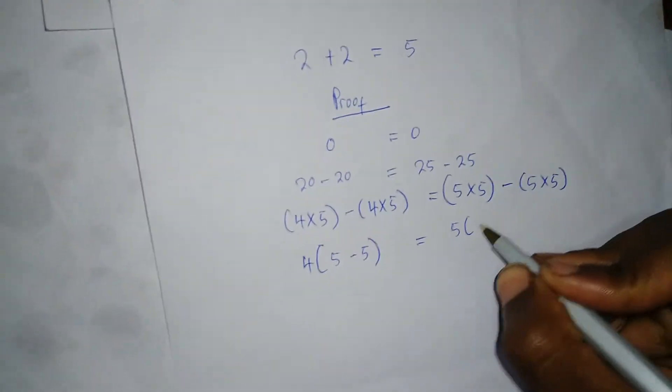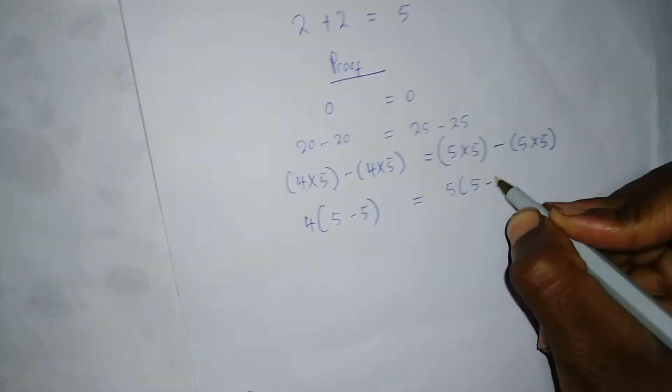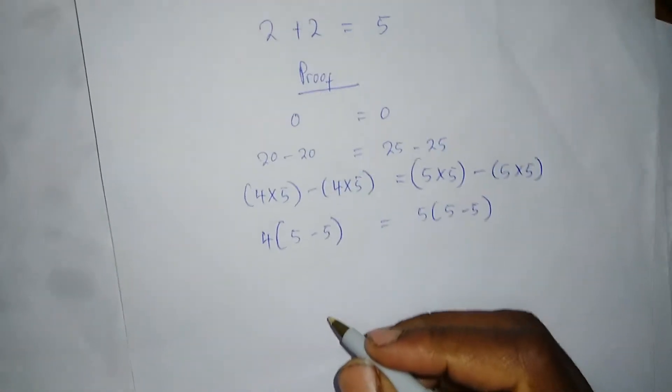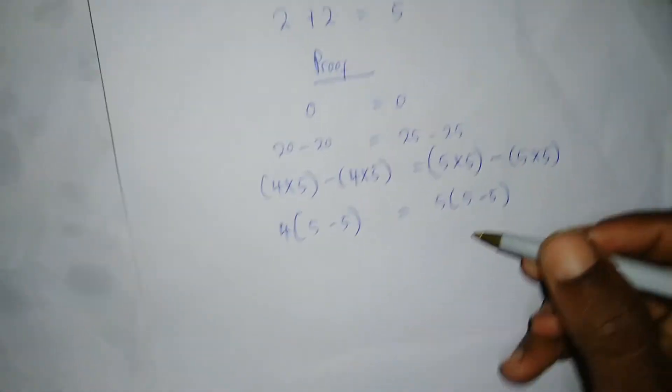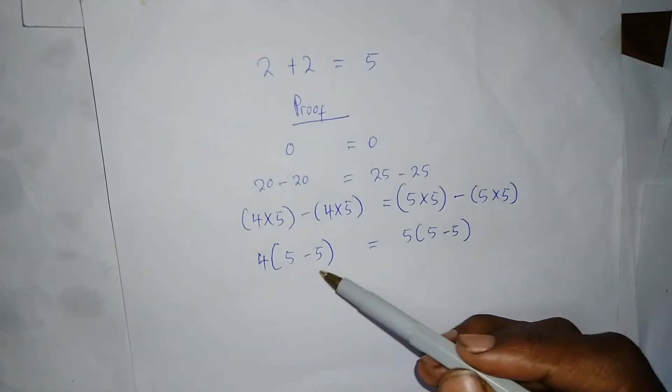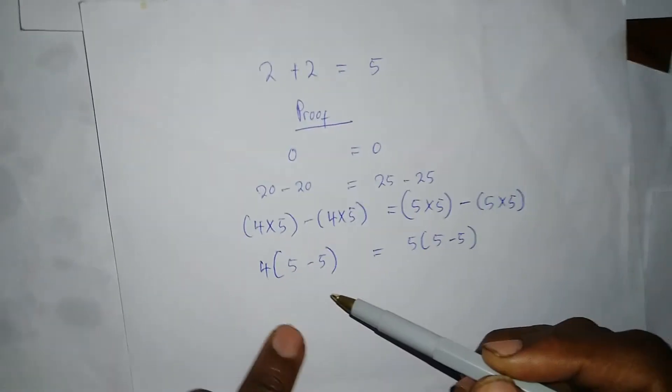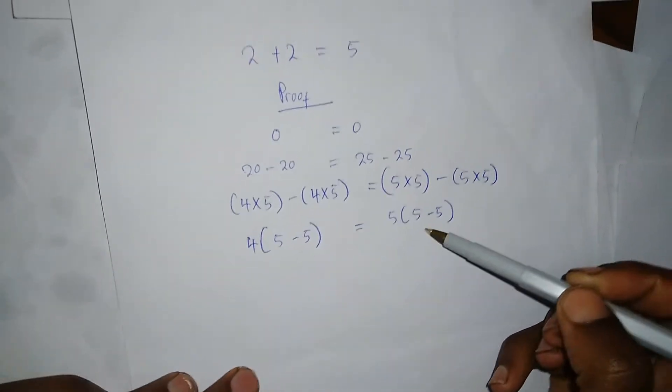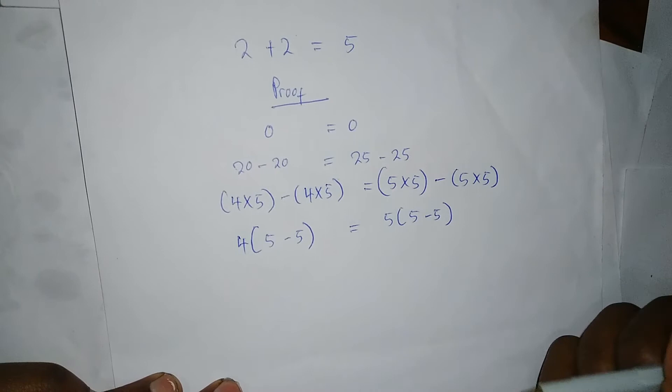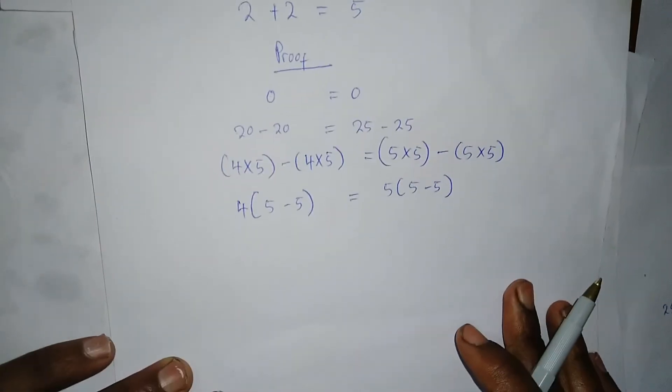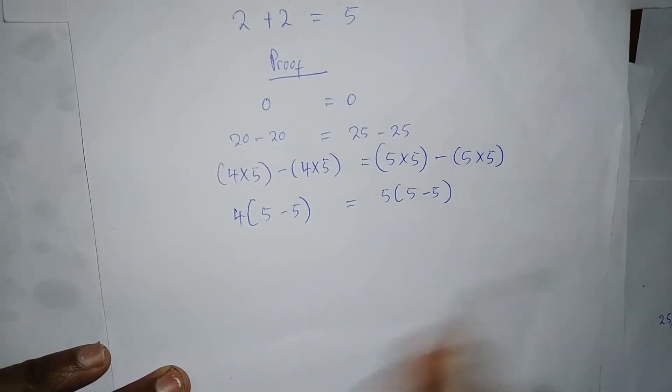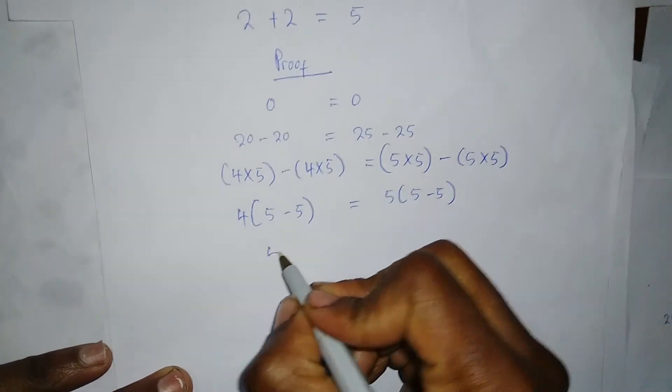it remains 5, 5 minus 5, right? Then I can, as you can see, this factor or this value here is equal to this, so mathematically I can cancel the equal values on both sides. It remains 4 is